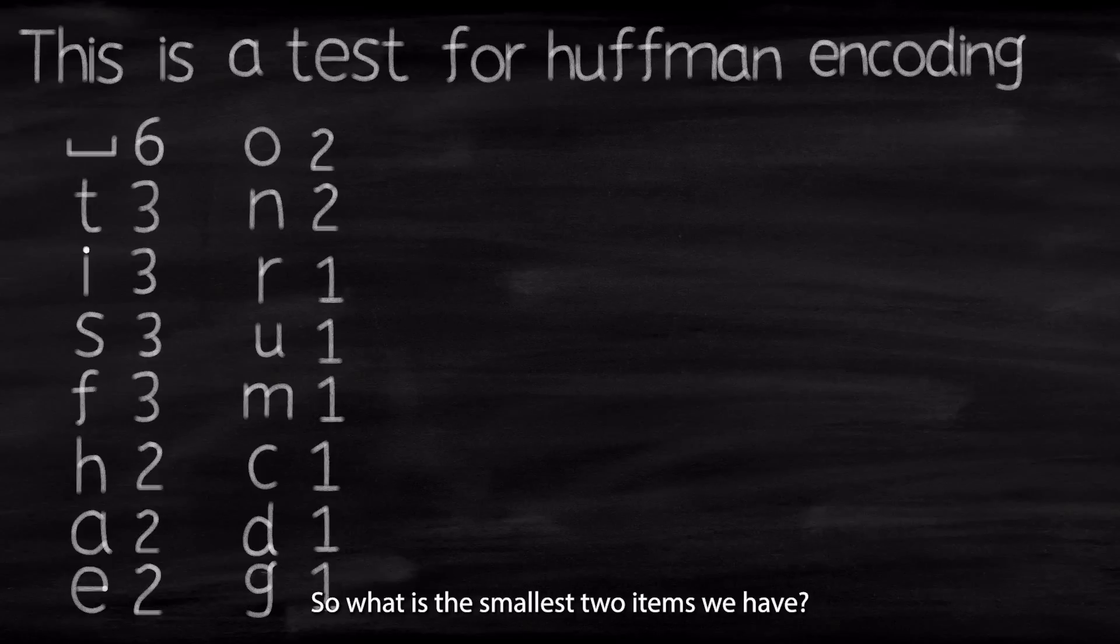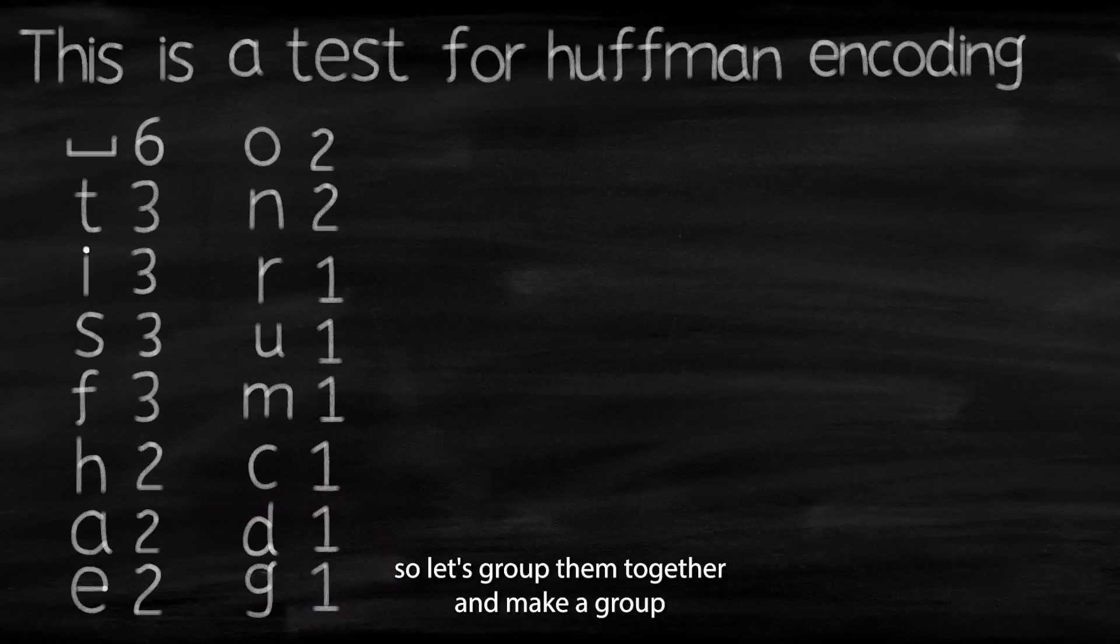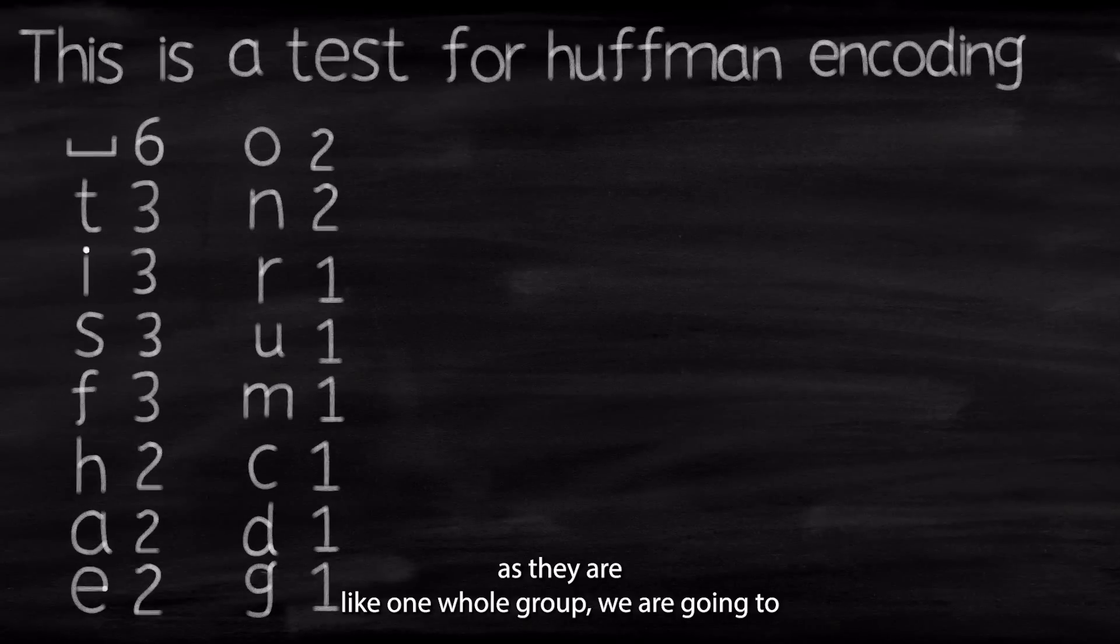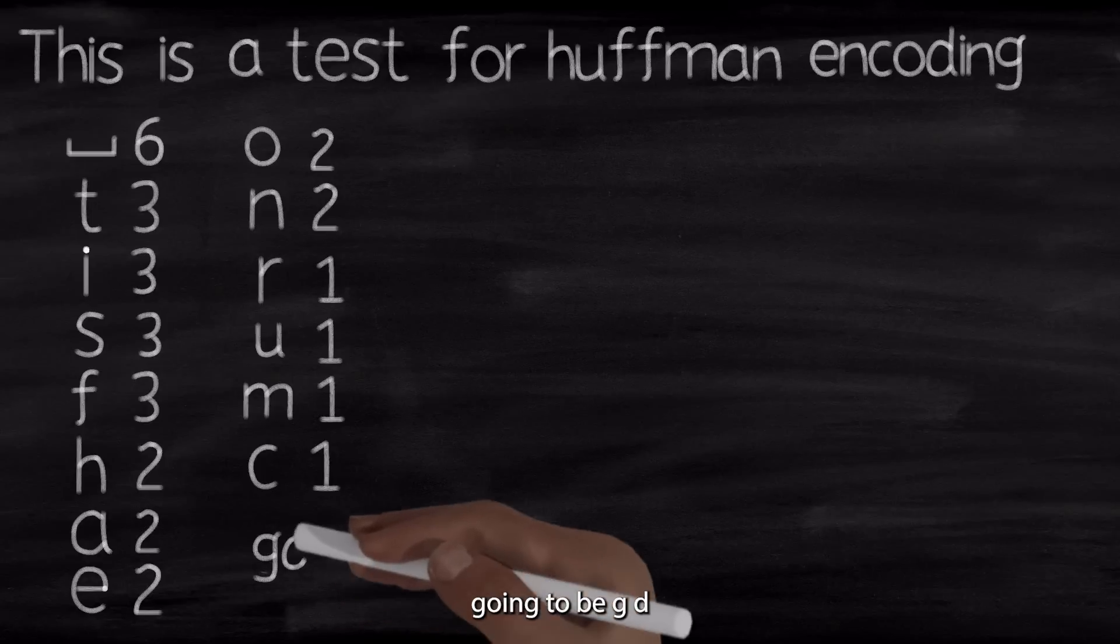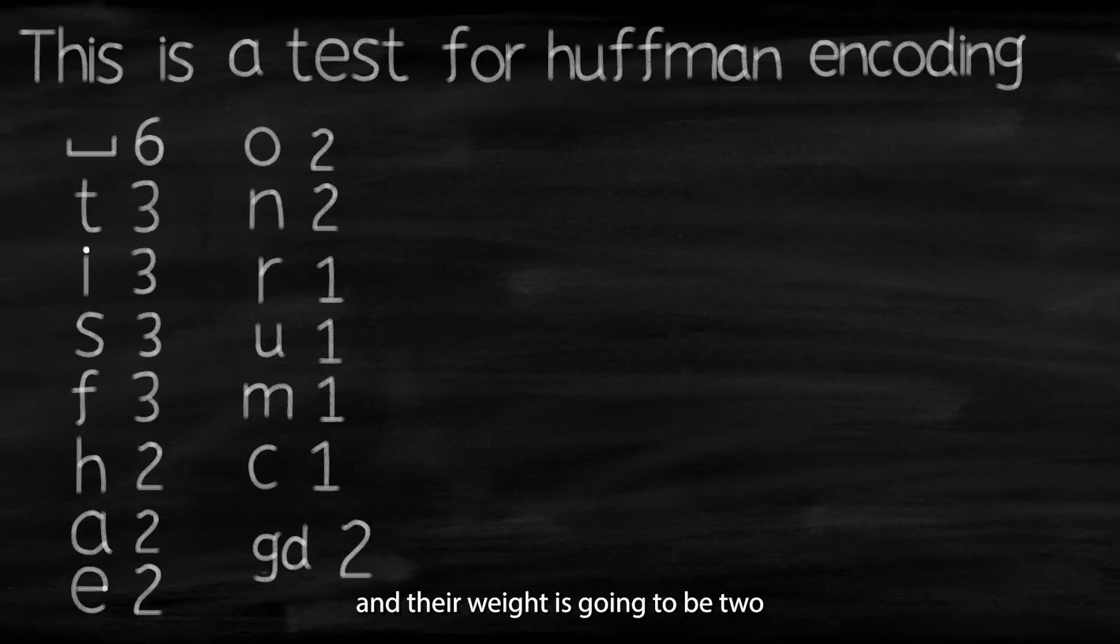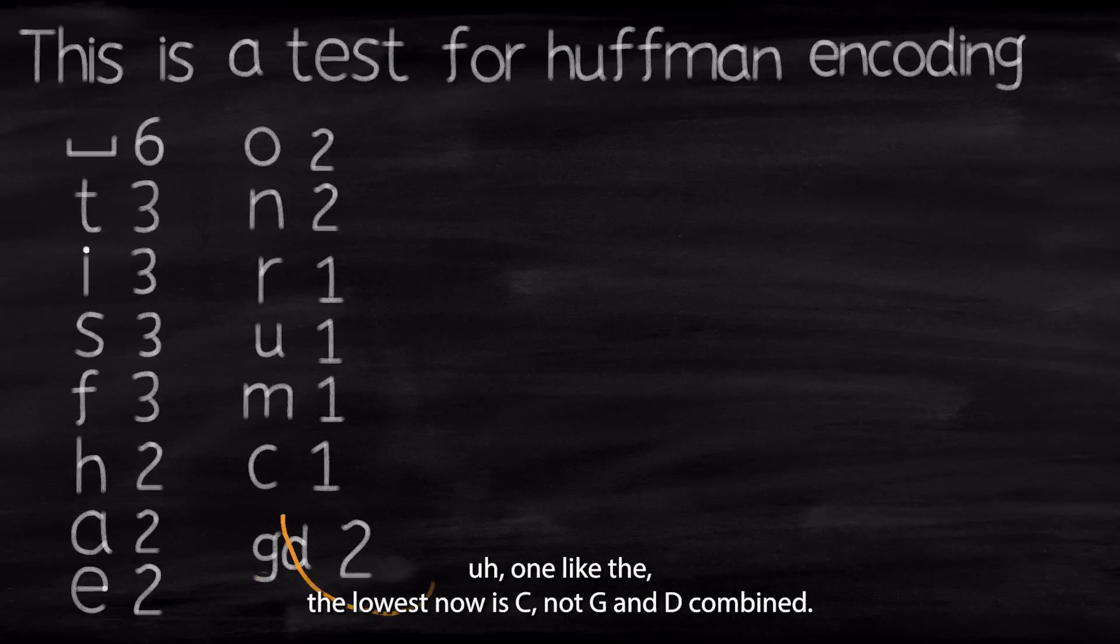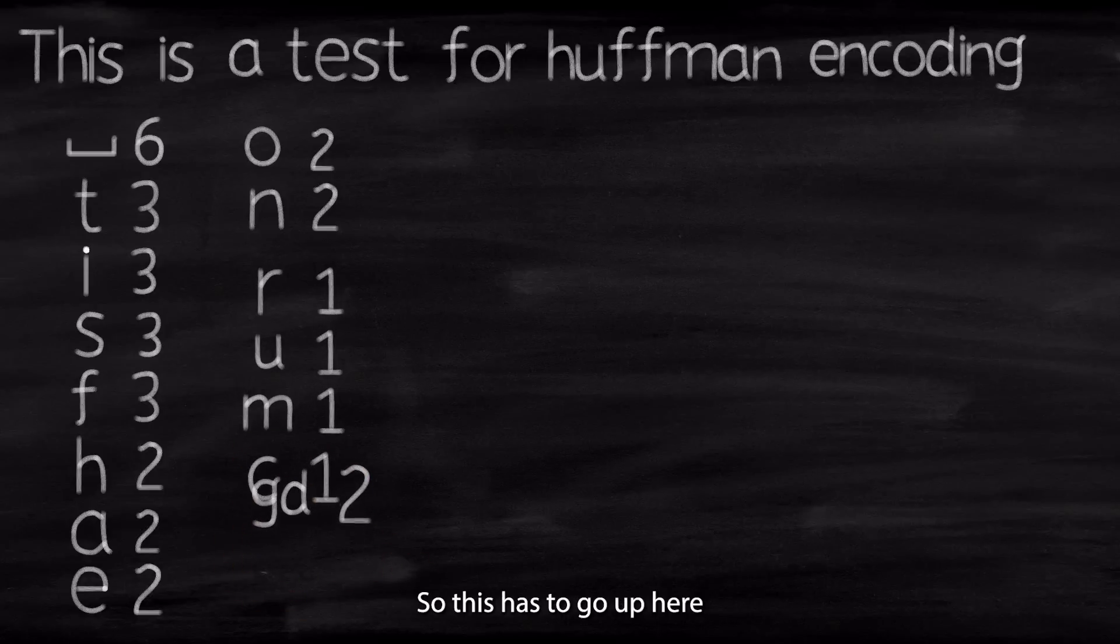So what is the smallest two items we have? The smallest two items we have are G and D. So let's group them together and make a group as G and D. So here we're going to put G and D as two together into a small tree. And now, as they are like one whole group, we're going to remove them and put them into one united group. So they're going to be like this. They're going to be G, D, and their weight is going to be two. Their weight is going to be two combined.